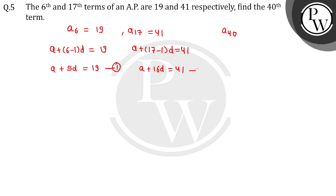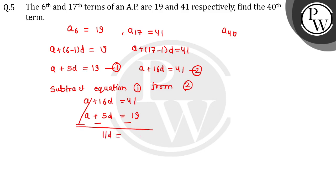We have equation 1 and equation 2. We have to subtract equation 1 from equation 2 so our A will cancel out. Subtracting A plus 5D from A plus 16D, we get 11D equals 22. D comes to 22 by 11, so D equals 2.